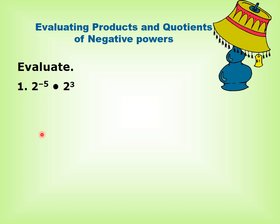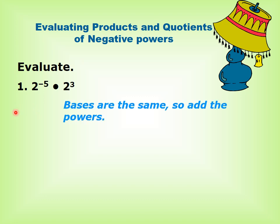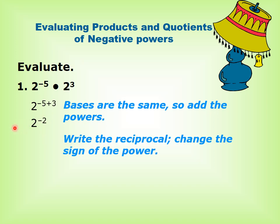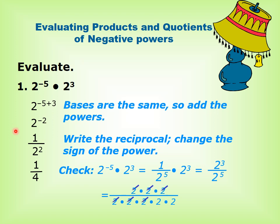Evaluating a product with a negative power: 2 power negative 5 times 2 power 3. The bases are the same, so we can add the powers since we are multiplying with the same base. This equals 2 power (negative 5 plus 3), equals 2 power negative 2. To get rid of the negative power, write the reciprocal and change the sign: equals 1 over 2 power 2, equals 1 over 4.